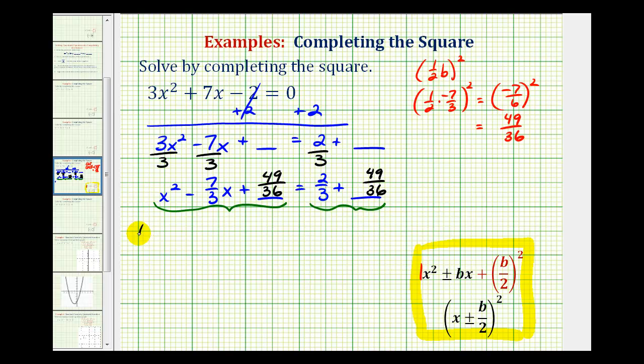This will factor into two binomial factors. The first terms will be x and x, the factors of x². The factors of 49/36 that add to -7/3 are going to be -7/6 and -7/6. So I'll have minus 7/6 here and minus 7/6 here.